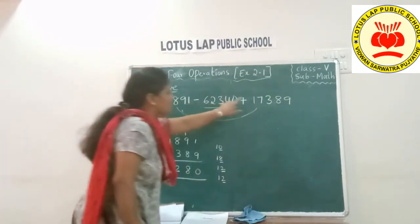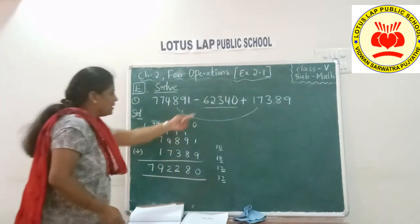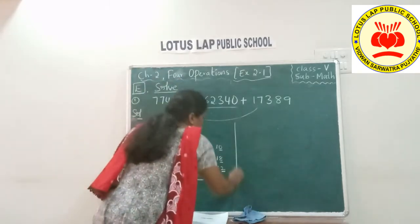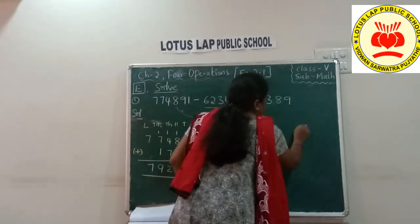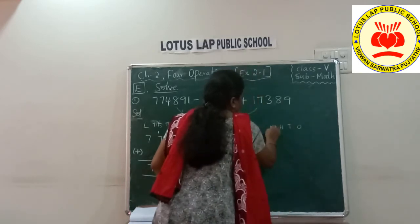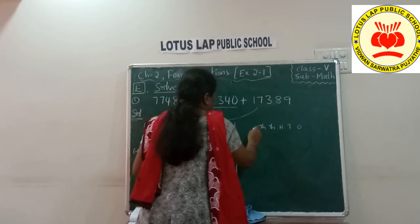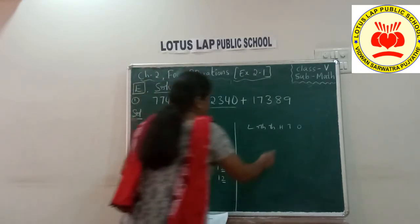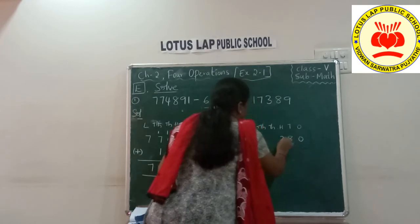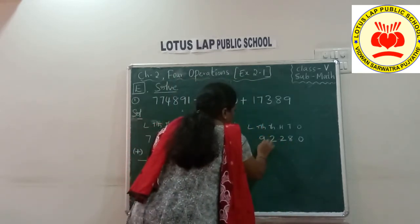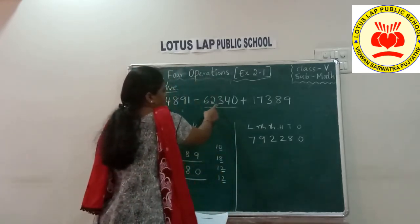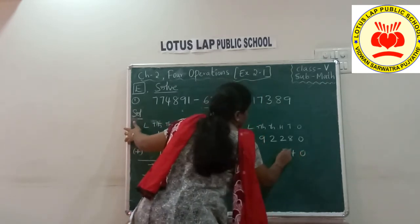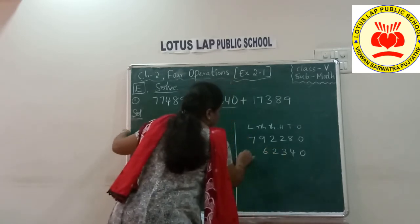Next, we have to subtract the second number from this addition answer. So let me start the subtraction. Ones, tens, hundreds, thousands, ten thousands, then lakhs. Let me write the addition result: 7, 9, 2, 2, 8, 0. Now let us write the number we have to subtract: 0, 4, 3, 2, 6 — and put the minus sign.